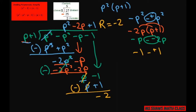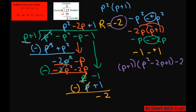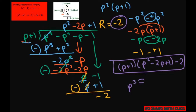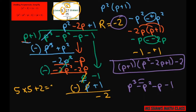This means that p plus 1 times p squared minus 2p plus 1 — that's our quotient — plus our remainder. Since our remainder is negative, this equals our dividend of p cubed minus p squared minus p minus 1. Just like you could say 5 times 5 plus your remainder gives you your dividend of 27.